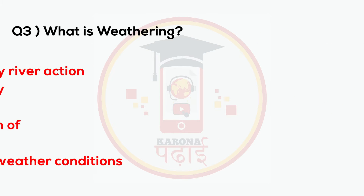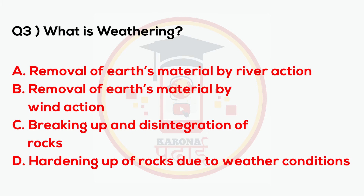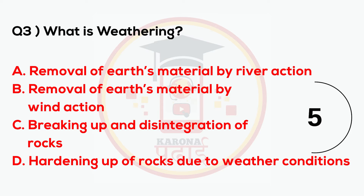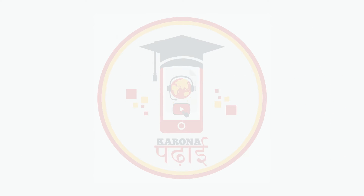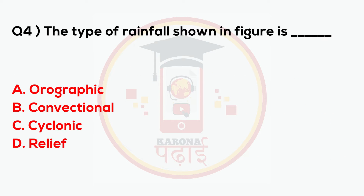What is weathering? Weathering is the breaking up and disintegration of rock. The type of rainfall shown in the figure is blank.